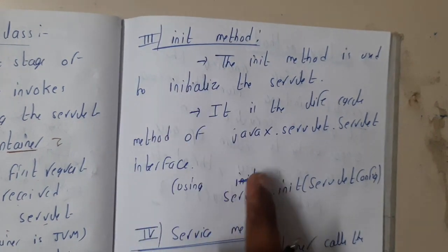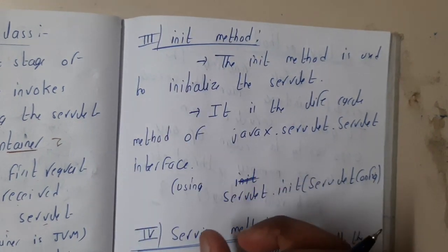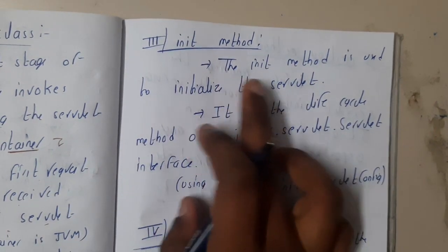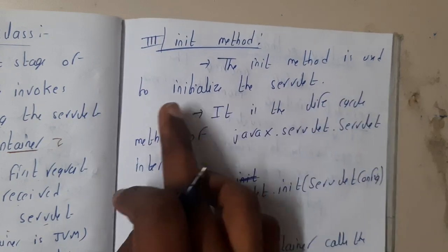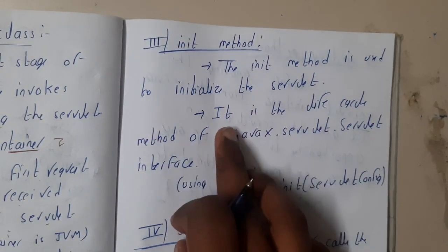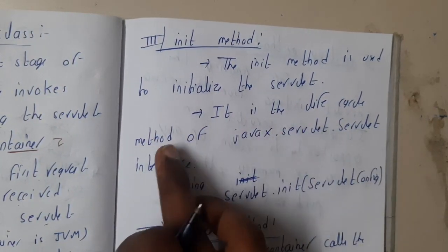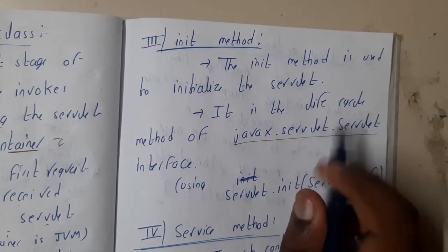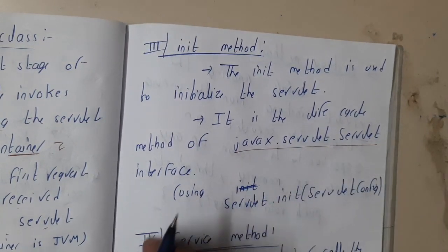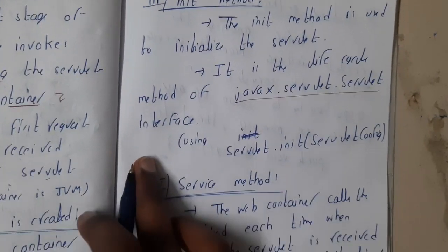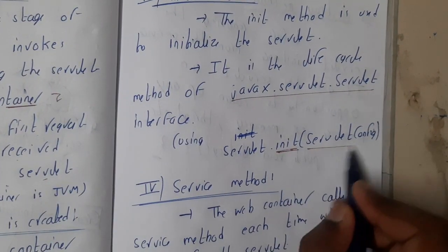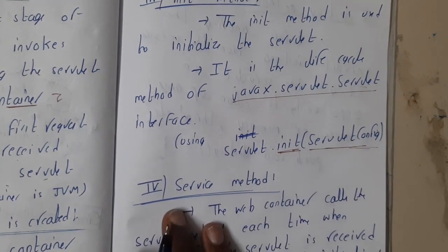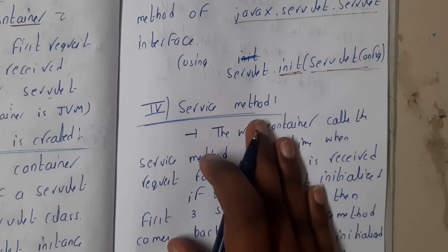The third stage is init — initialization. The init method is used to initialize the servlet. It is a lifecycle method found in the javax.servlet package. It is called with some servlet configuration info: init(ServletConfig).